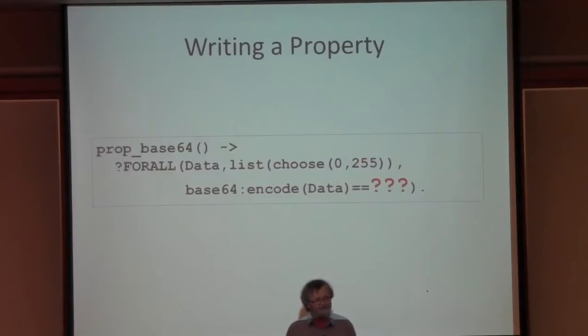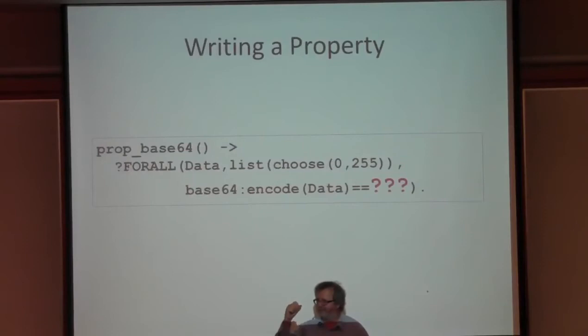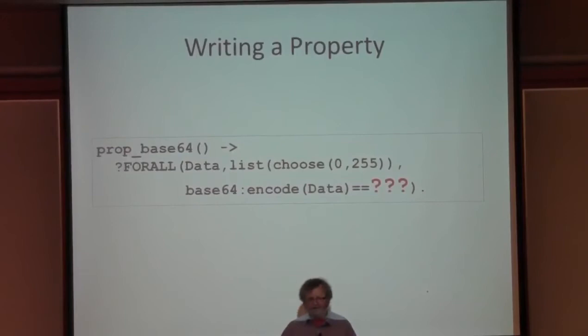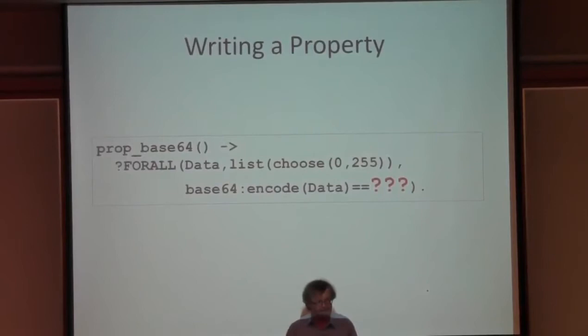Let's write a property - we're going to do a lot better. First, we'll quantify: for all data that is a list of bytes, we'll call the base64 encoding on that data. That's much better than those four sample strings in the fixed set of tests. So I take an arbitrary list of bytes, call the encoder on it - and then what do I put instead of those question marks? This is a moment at which many people who try to use property-based testing get stuck: they can't think what to put there.